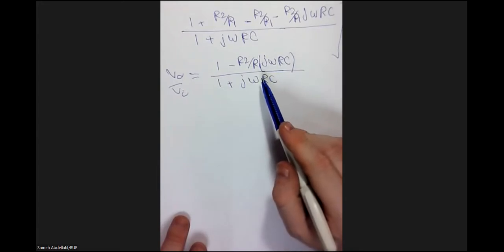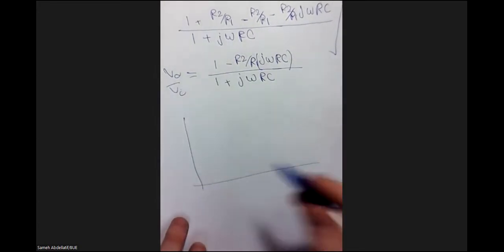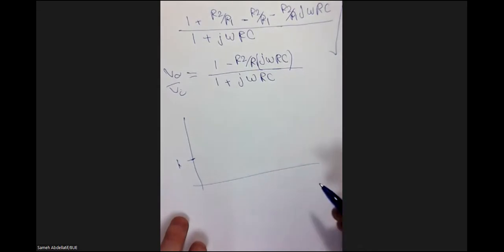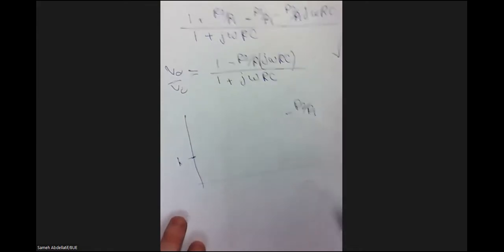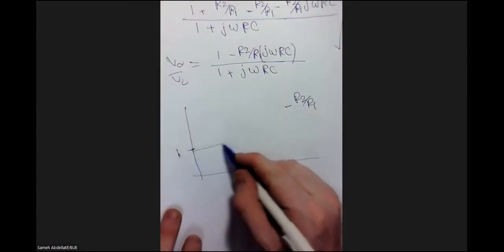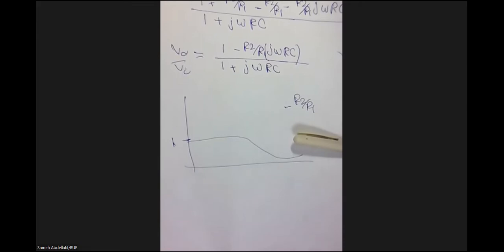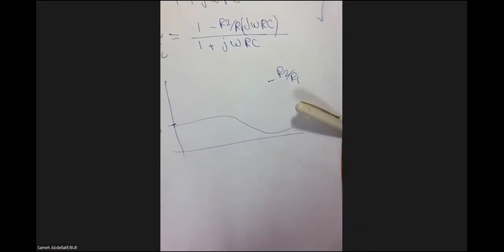For DC gain (ω=0), this equals 1. For high-frequency gain, it becomes R2/R1. If R2/R1 is small, this acts as a low-pass filter. You can tune the level of the high-frequency component. This is another configuration using operational amplifiers as an active filter, with a flat DC gain of 1. We have now demonstrated examples of active filters: low-pass, high-pass, and tunable configurations.